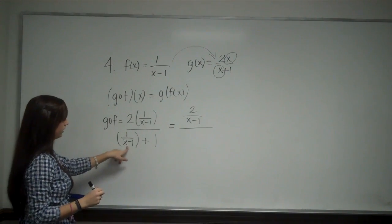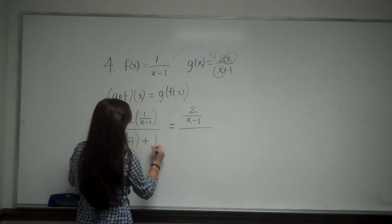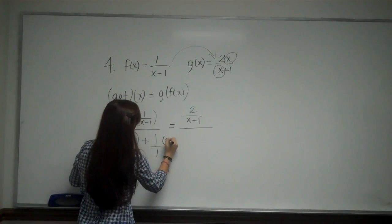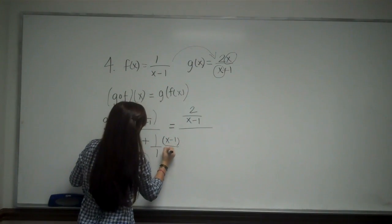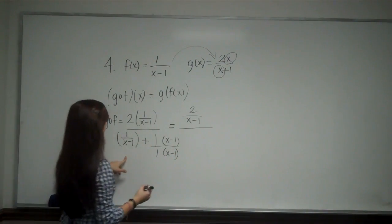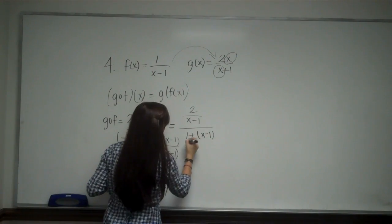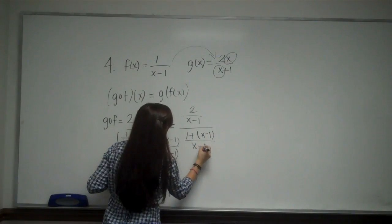Now for here, I want to get a common denominator. x minus 1 is going to be my common denominator. So this is the same as 1 over 1 times it by x minus 1 over x minus 1. And when I do that, I'm going to have 1 plus x minus 1 all over x minus 1.